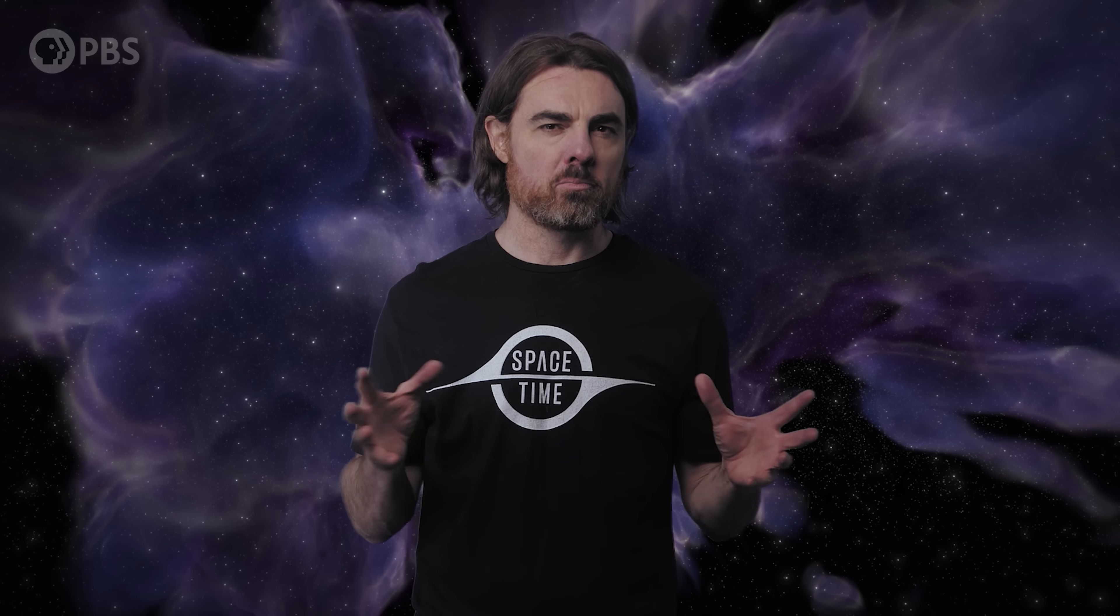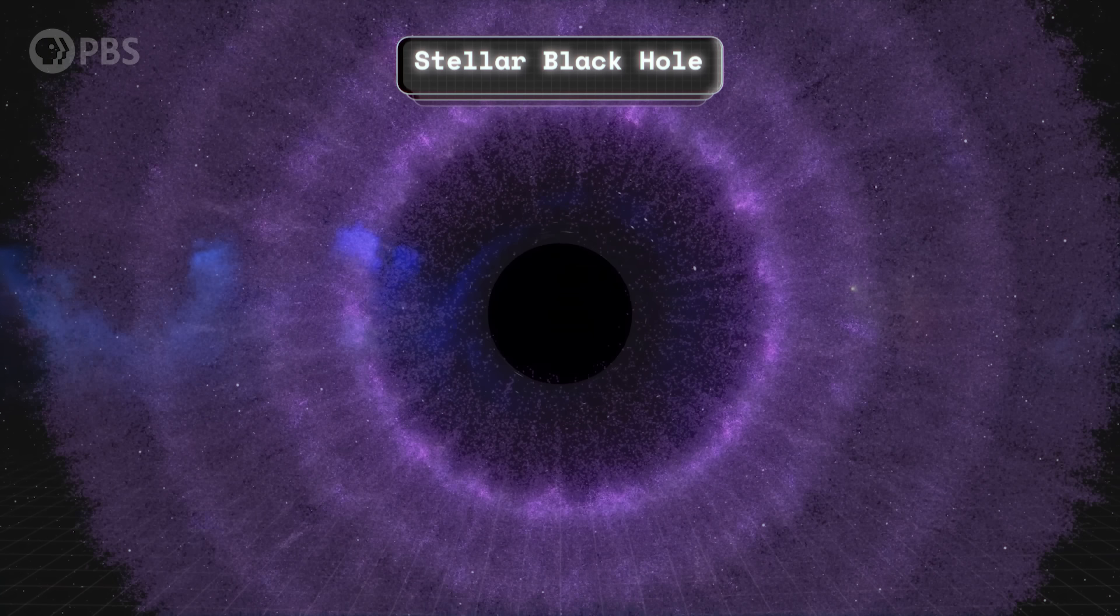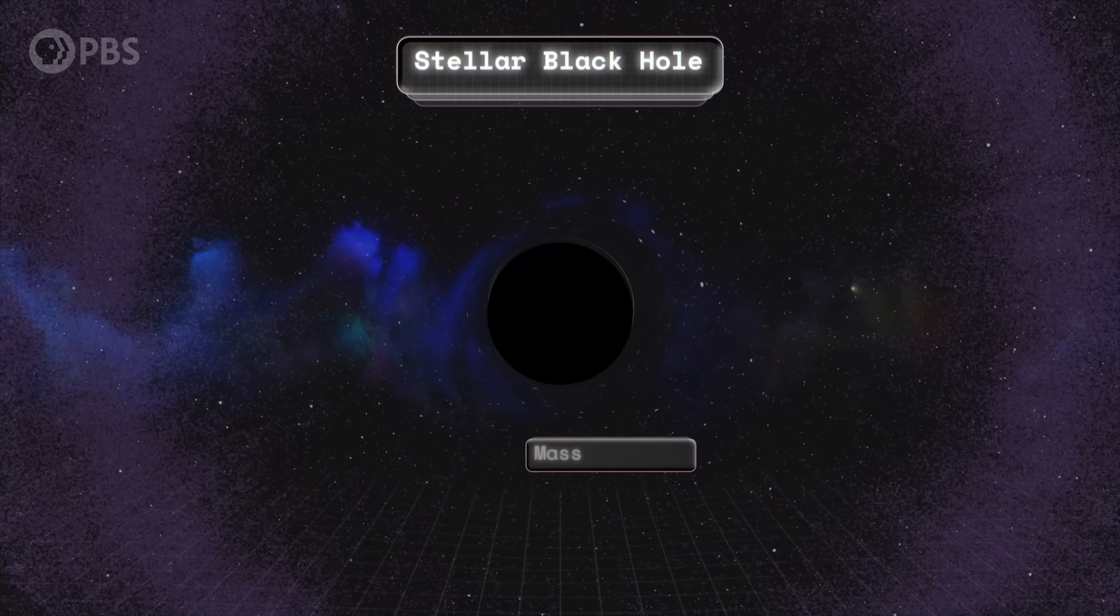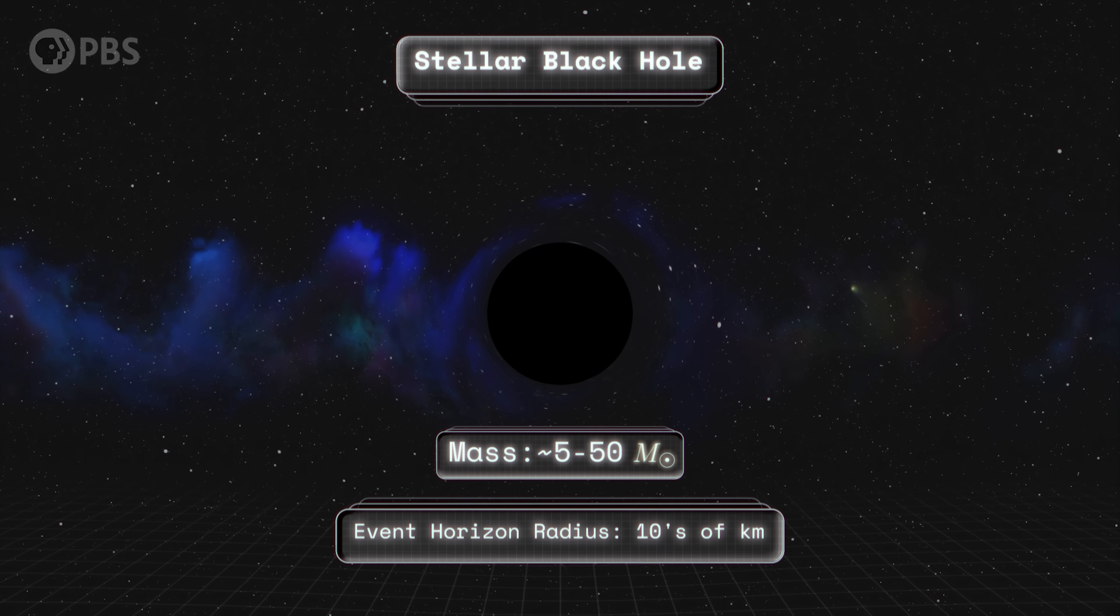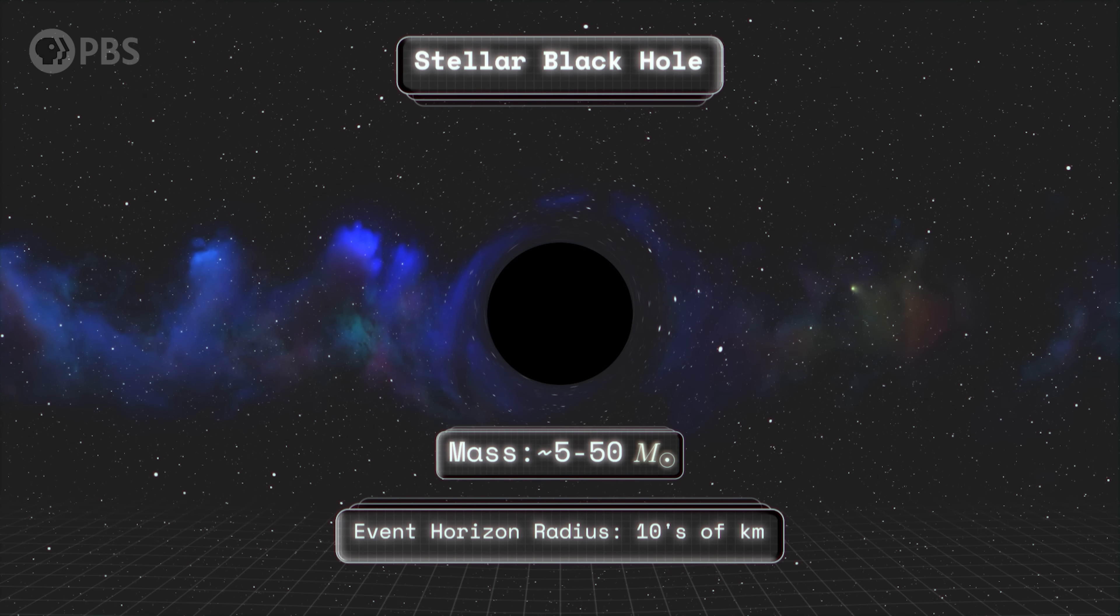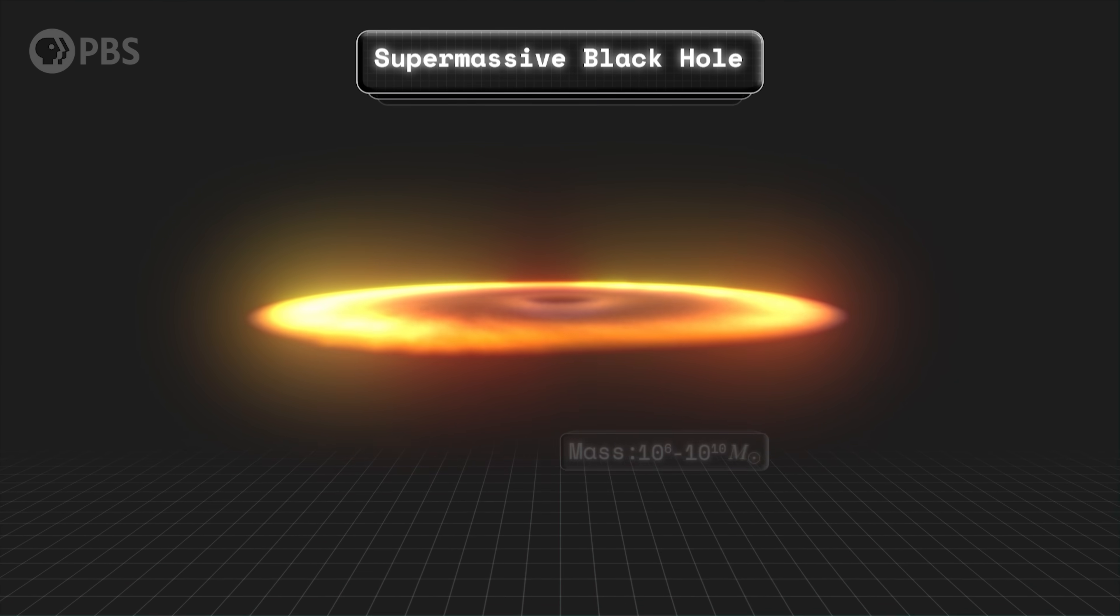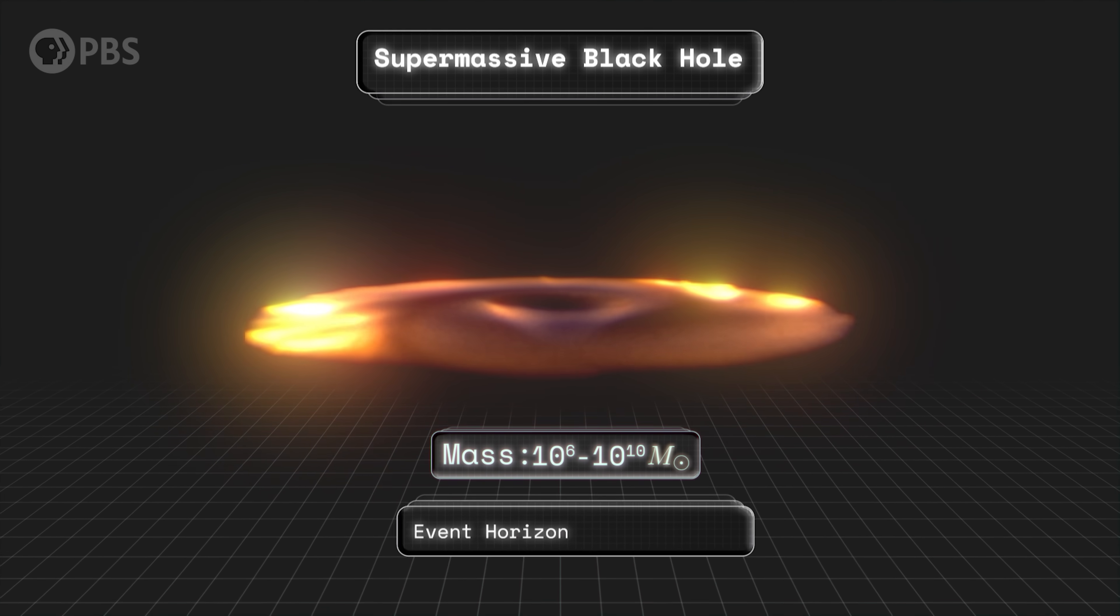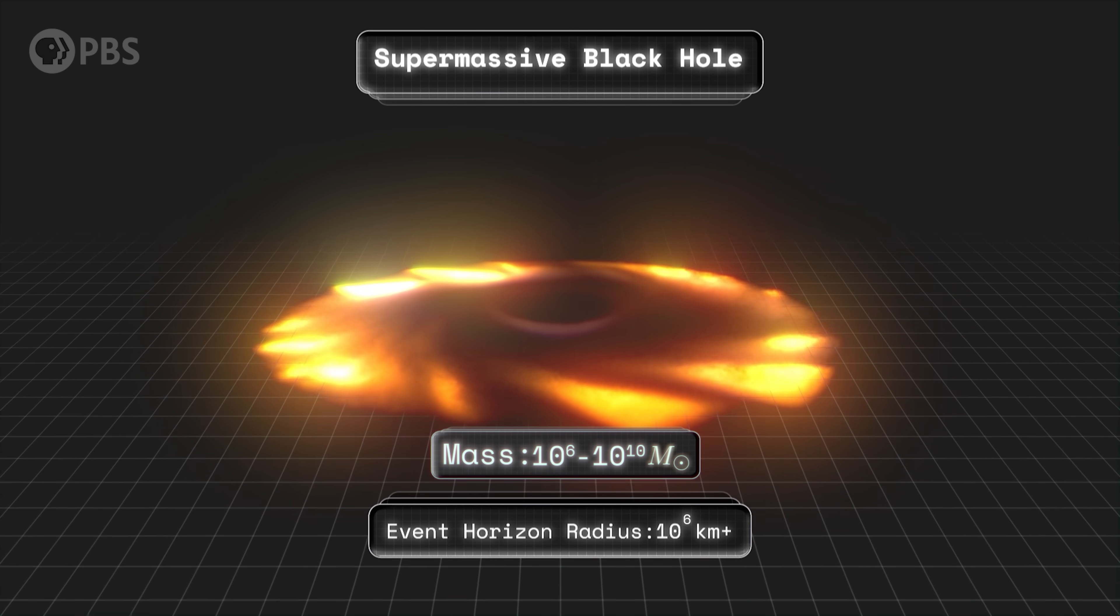There are two main types of black holes that we definitely know exist. There are the stellar black holes that might be 10 to 50 times the mass of the sun. These are the ones left behind when the most massive stars end their lives in supernova explosions. These things are typically tiny on astronomical scales, with event horizons only tens of kilometers across. Then we have the supermassive black holes in the centers of galaxies, weighing in at millions to billions of times the sun's mass, with radii on the scale of solar systems.